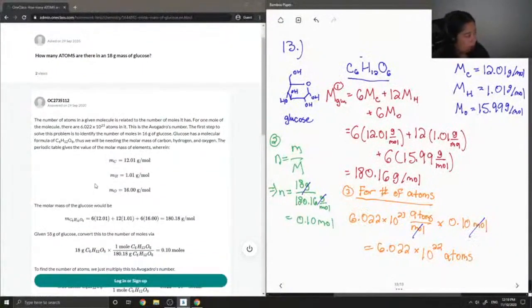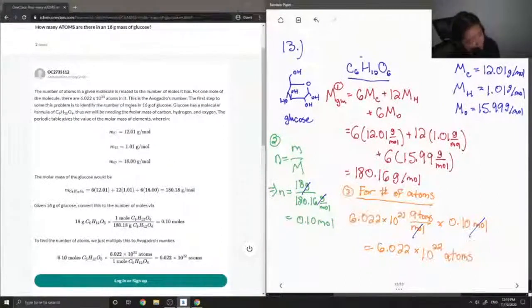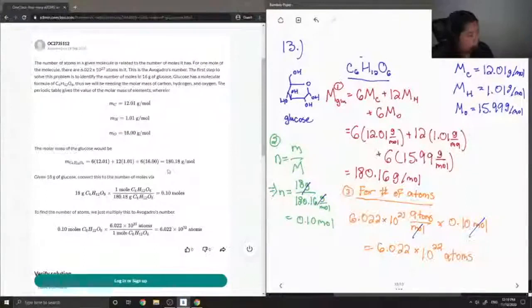And let's see what our junior tutor said. Number of atoms in a given molecule is related to the number of moles it has. For one mole of the molecule, there are 6.022 times 10 to the 23 atoms, this is Avogadro's number. First step is to solve this problem to identify the number of moles in 16... 16... oh, it should be 18 grams of glucose. And then first they calculated the molar mass of glucose, which is around 180.18. Pretty much the same thing. So they use 16 instead of 15.99, but it's still correct.